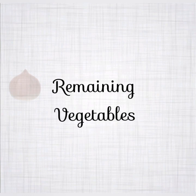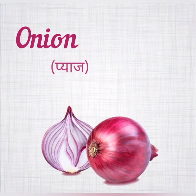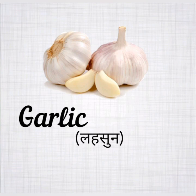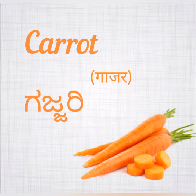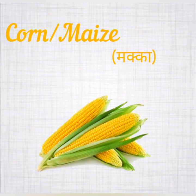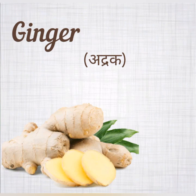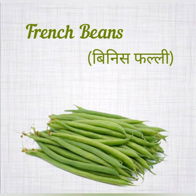Friends, now let's learn the remaining vegetables. Onion — irulli. Garlic — bellulli. Peas — batani. Carrot — kachari. Corn or maize — makke joda. Ginger — shanthi. French beans — ala sundae.